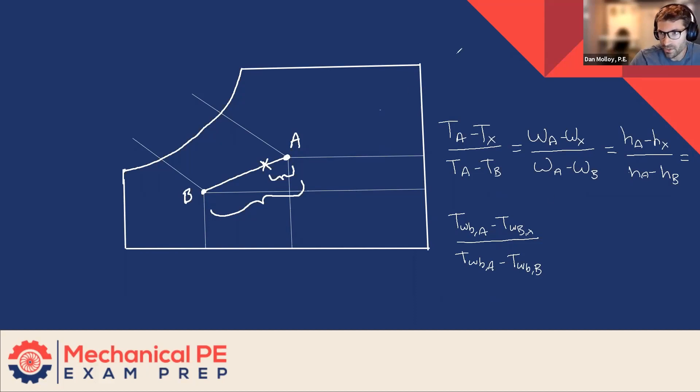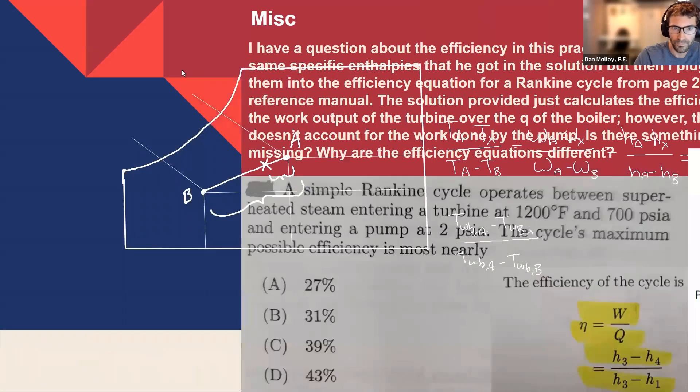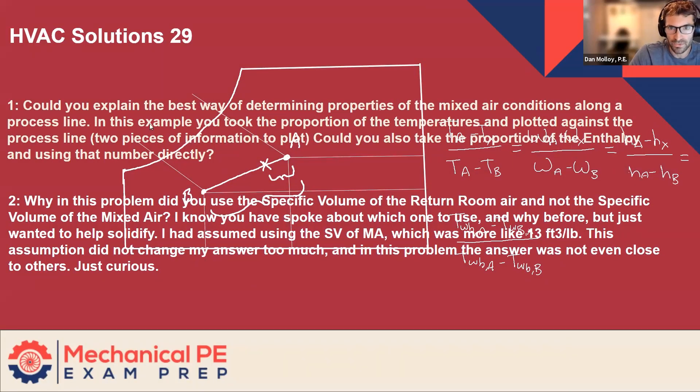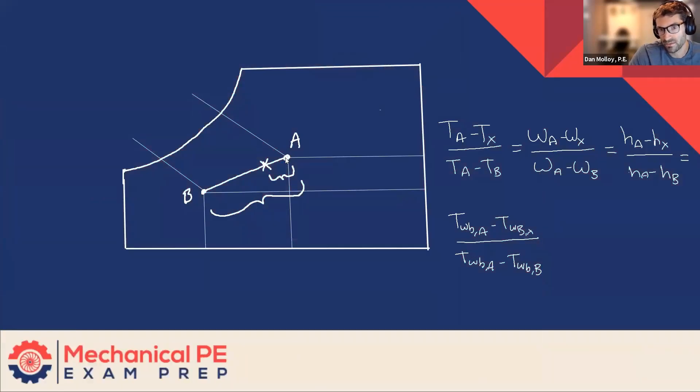So tying that back to the original question, could you take the proportion of enthalpy and use that number directly? I think the answer is yes. You could take, if you're able to directly identify the enthalpy at X, because you know something, X is a fully defined state in that you found it some other way. Maybe use dry bulb, maybe use humidity ratio, maybe used wet bulb, whatever the specifics were of that problem, X became a fully defined state. And then you can just draw a line of constant enthalpy. Let's actually draw that line. Here's our line of constant enthalpy. And then we can pick the enthalpy off of the linear scale on the top left of the psychrometric chart. So that's the general answer to this question.